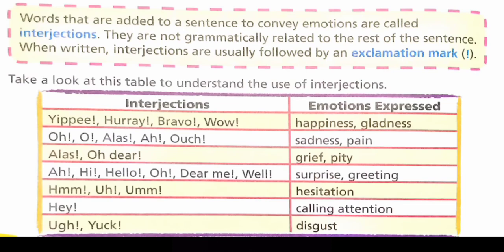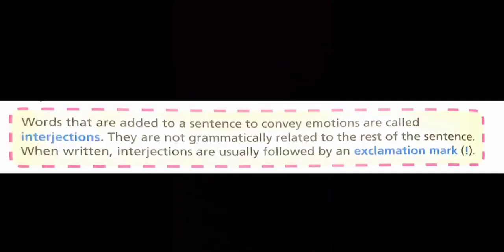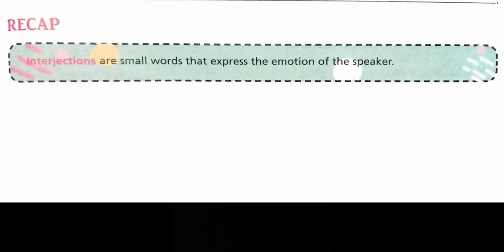I hope everyone understood this chapter. Let's recap. Words that are added to a sentence to convey emotions are called interjections. They are not grammatically related to the rest of the sentence. When written, interjections are usually followed by an exclamation mark. Interjections are small words that express the emotions of the speaker.